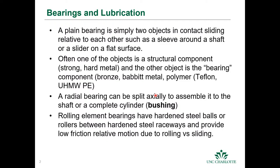The other object is the bearing component. Usually this is a softer material intended to eventually wear out, commonly made from bronze or Babbitt metal. There are also polymer bearings made out of Teflon, acetyl (which is Delrin), UHMW (ultra-high molecular weight polyethylene), or other materials. A radial bearing can be split axially to assemble it onto a shaft, or be a complete cylinder — in that case the bearing is referred to as a bushing.